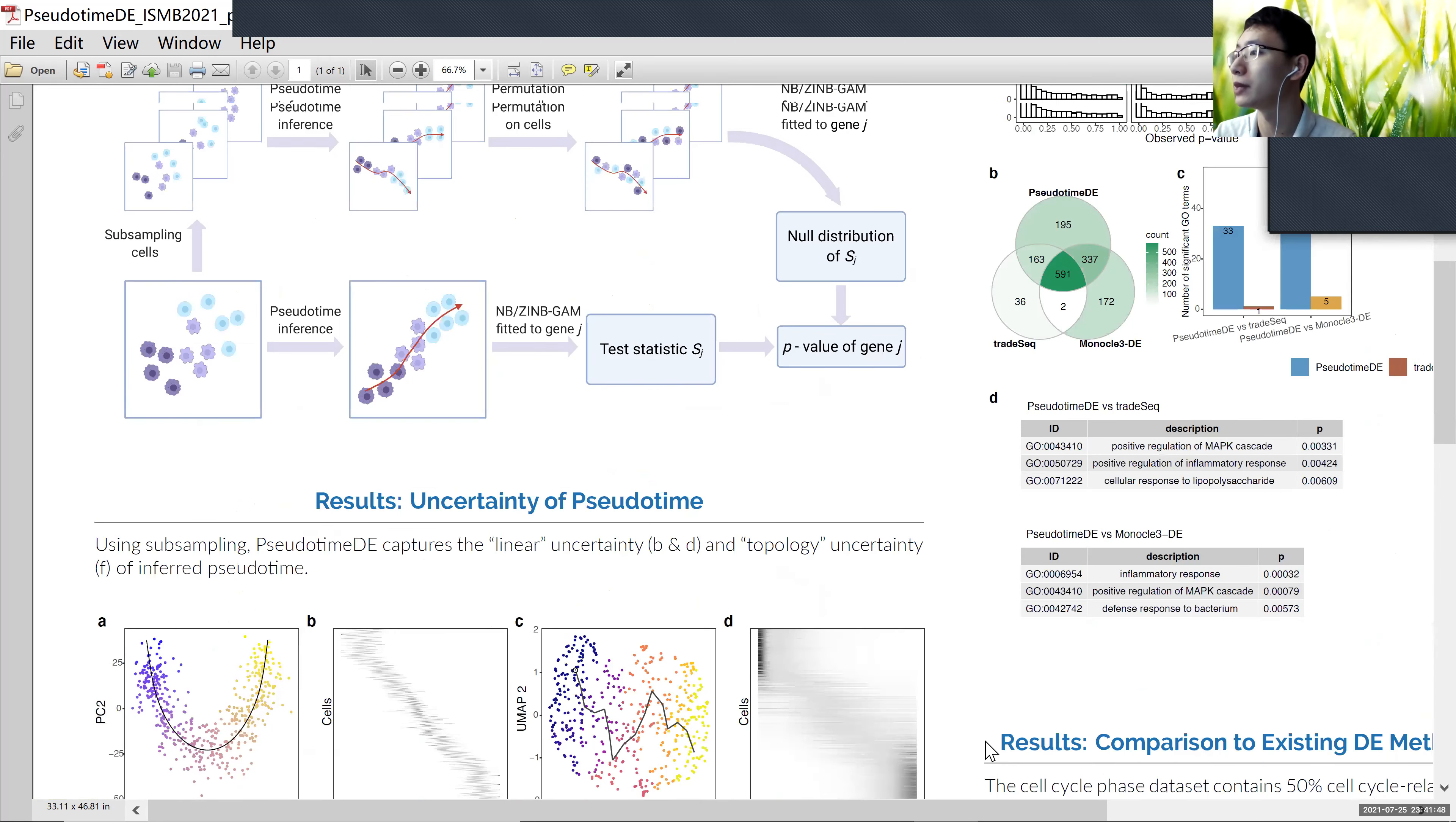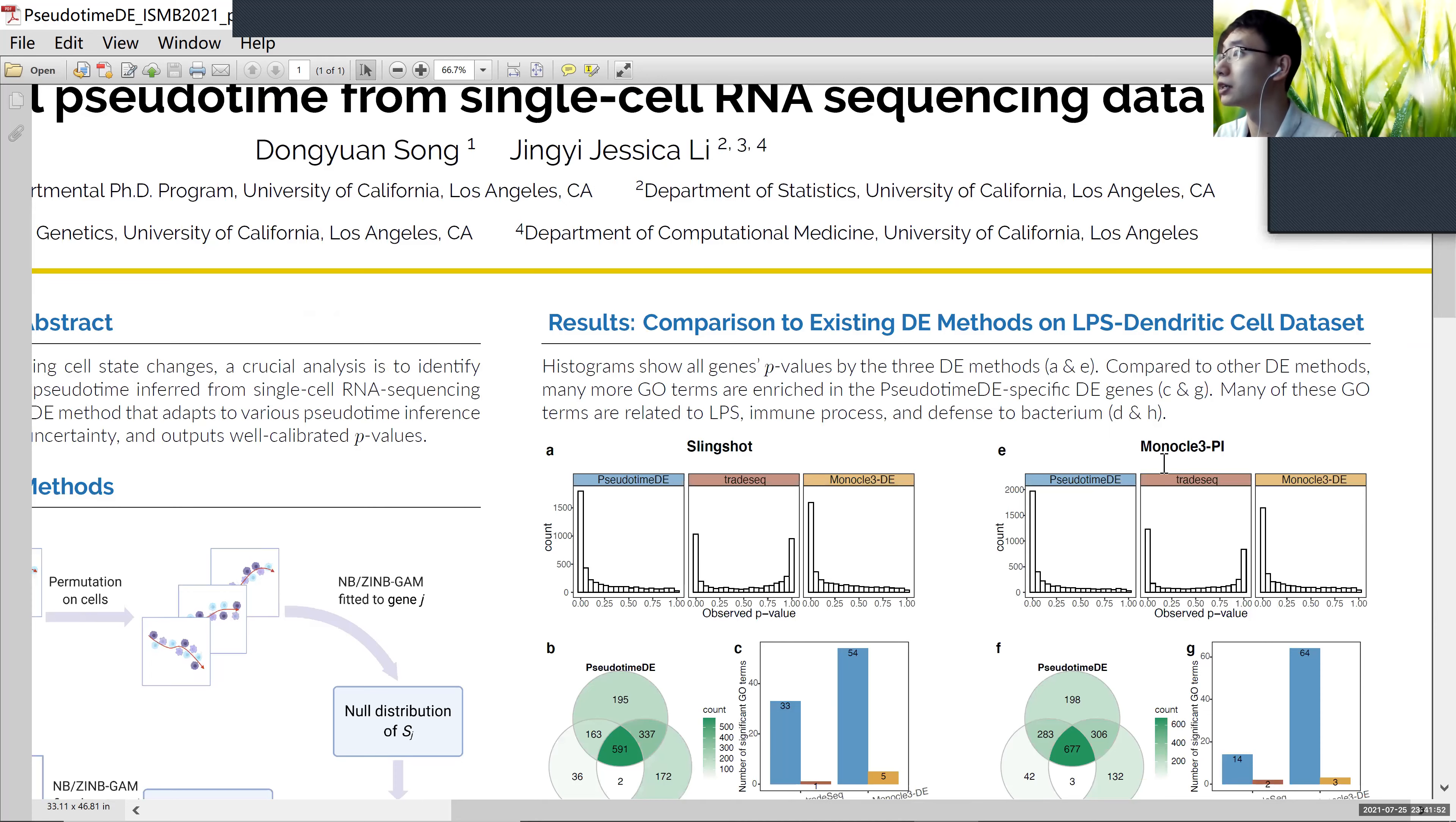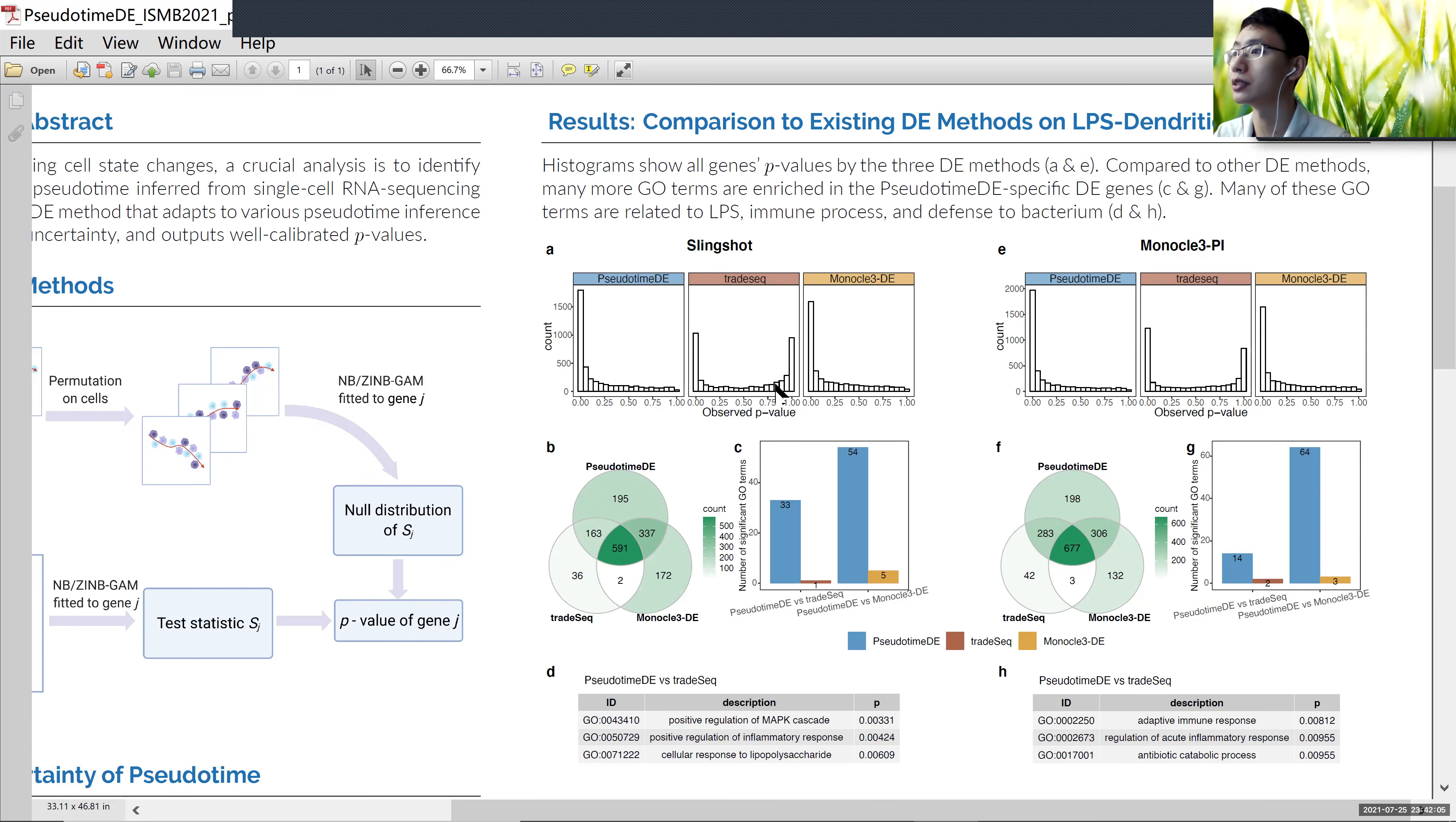We perform our method on five different real data sets, but we can only introduce two here. The first data set is dendritic cells stimulated with LPS. We can see some other methods' p-values show bimodal distribution.